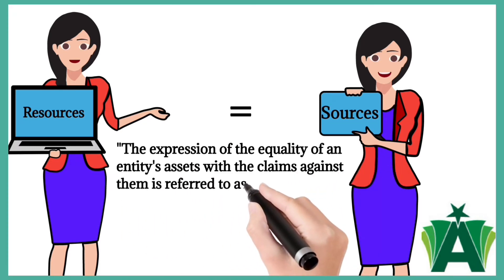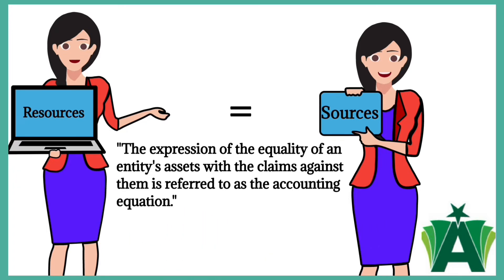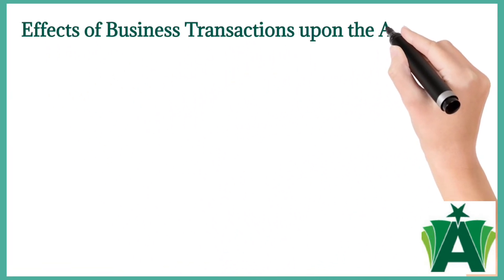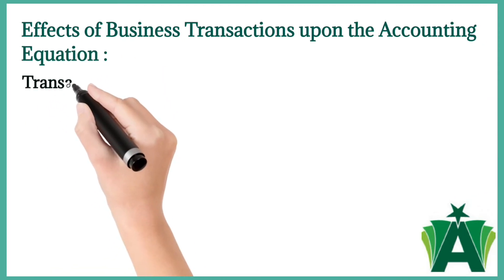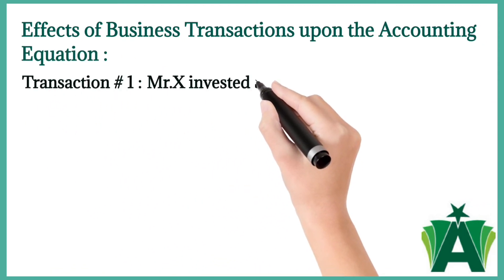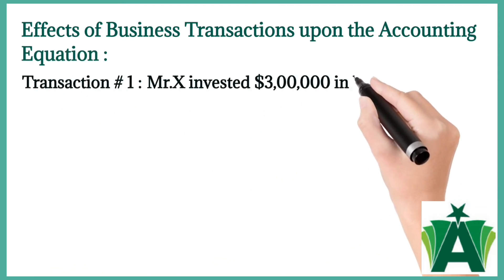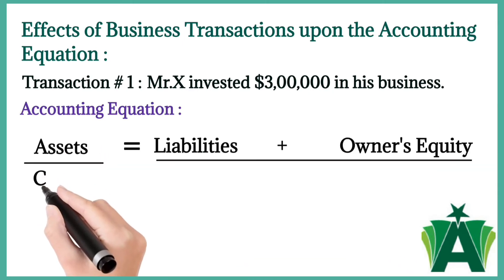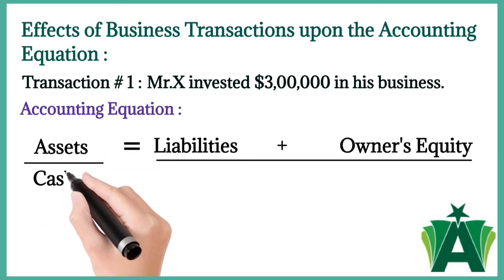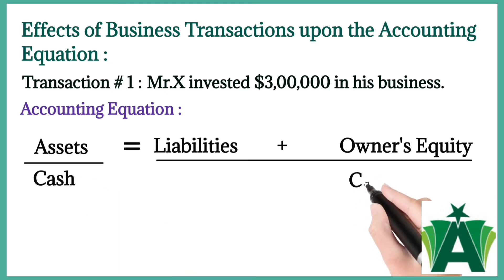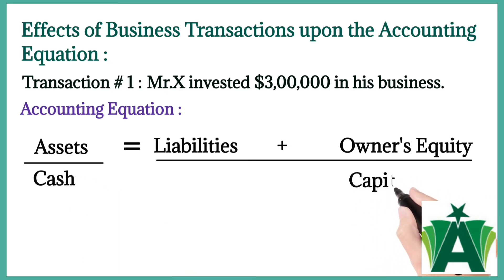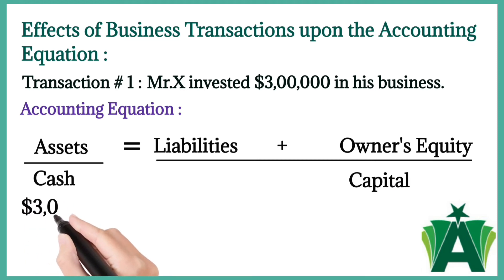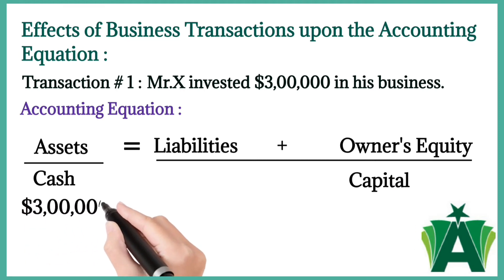The expression of the equality of an entity's assets with the claims against them is referred to as the accounting equation. Transaction number one: Mr. X invested $300,000 in his business. This is the first transaction of the business. It brought a double change in the financial position of the business unit — an asset increased by $300,000.